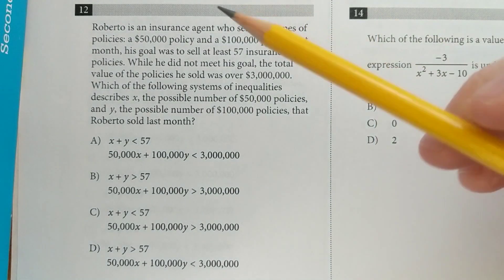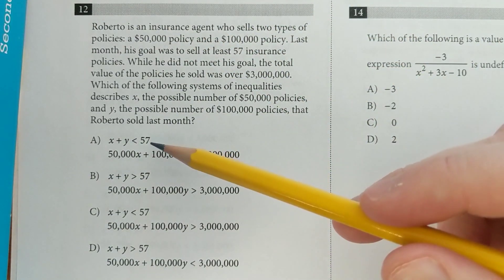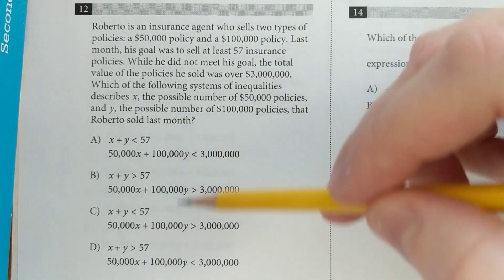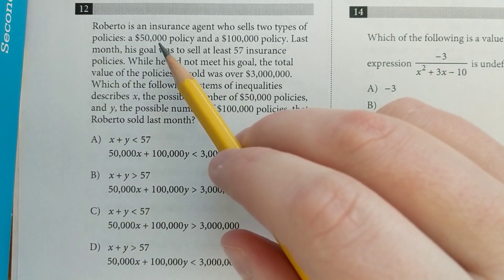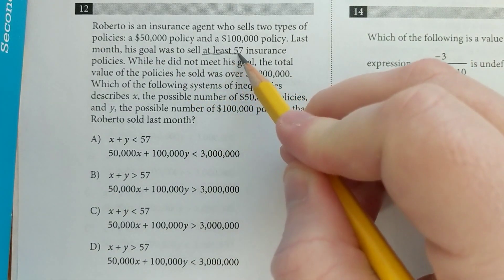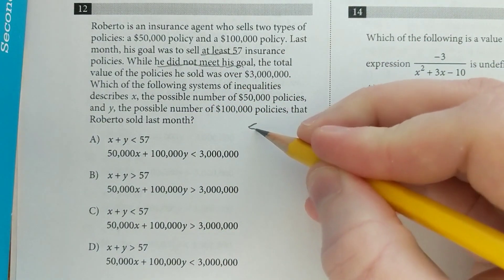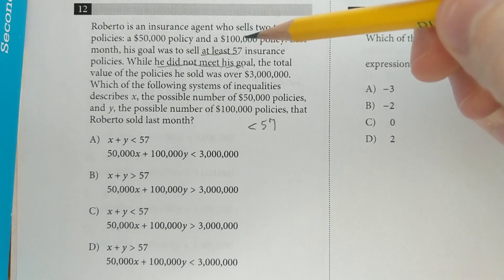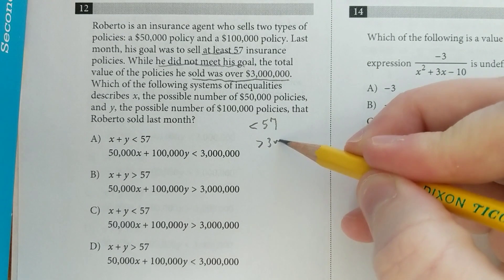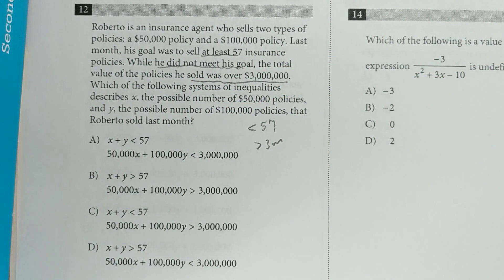Another thing I'll do whenever I see this huge mound of text is just immediately sneak a peek at the answers, and right away you can see that this is a system of equations. So now I am gonna read through the whole thing, but at least I know that I'm gonna have to set up a system. So we've got two types of policies, 50,000 and 100,000. The goal is to sell at least 57, but they set a little trap for us: he does not meet his goal. So already we know it's gonna be something is less than 57. But then it says the total he sold was over 3 million. And so now this is just saying which system represents that situation.